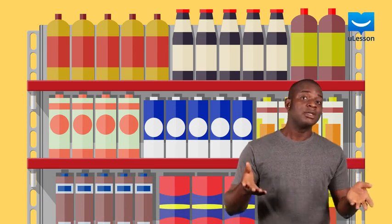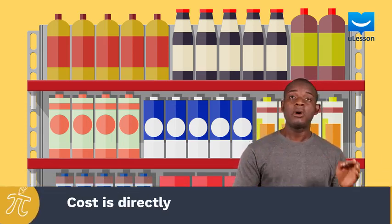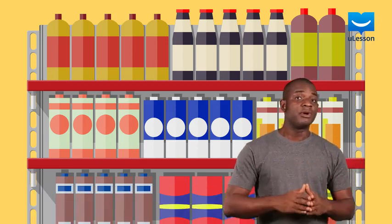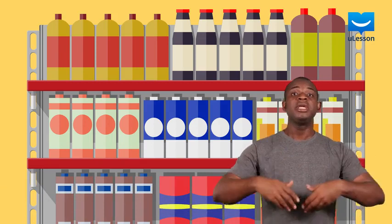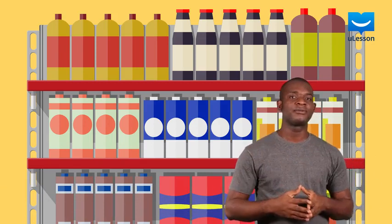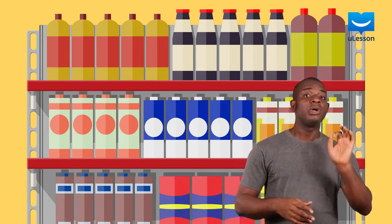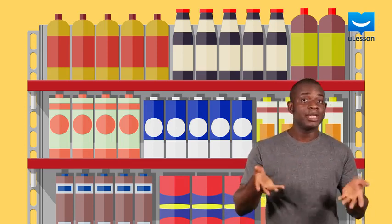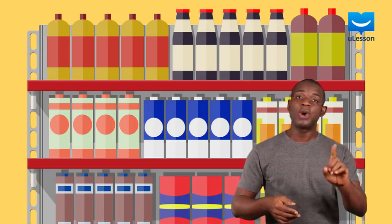The first thing you will observe is that the cost is directly proportional to the quantity. This is because a higher quantity incurs a higher cost. The first thing we will do is to find the proportionality constant, which in this case is the cost of one bottle.